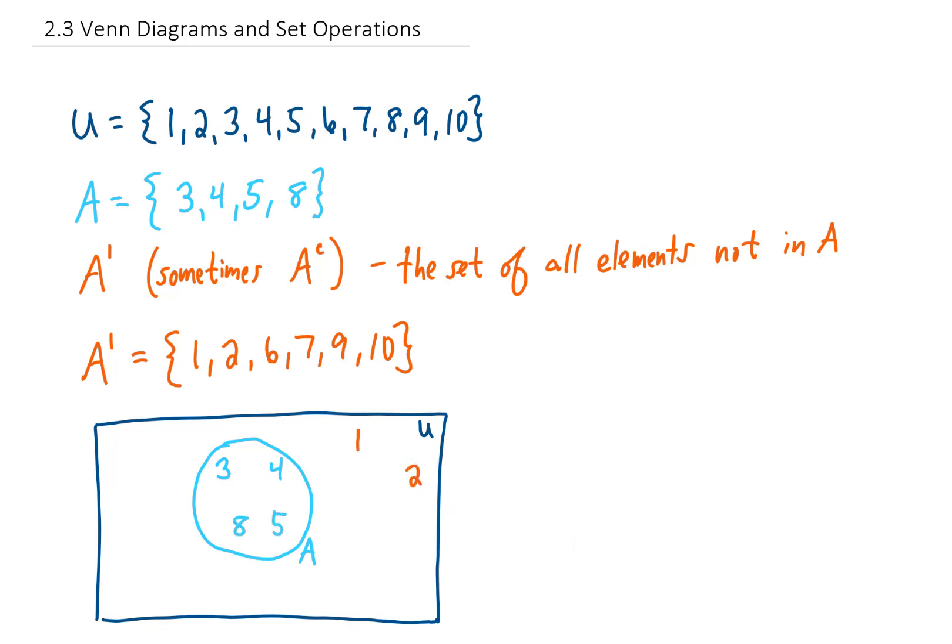Outside of A are the elements 1, 2, 6, 7, 9, and 10. Now I kind of scattered my elements all over the place, but you could have just as easily drawn a more ordered looking Venn diagram that would mean the exact same thing.